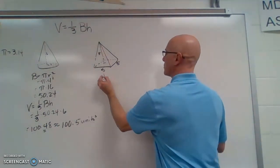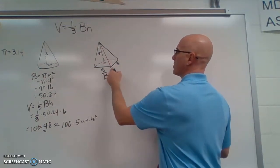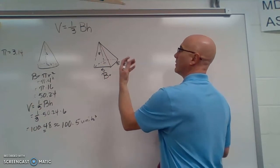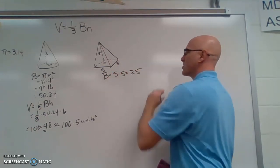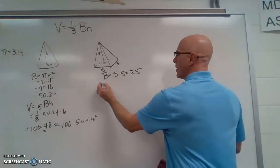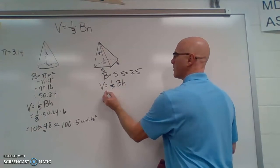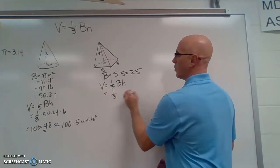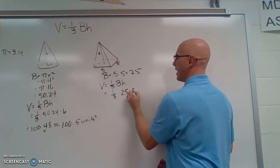So first we find the area of our base. So that is length times width or base times height. So it's five times five, which is 25 square units. Our volume, one-third base times height. So it's one-third times our base times our height of eight.